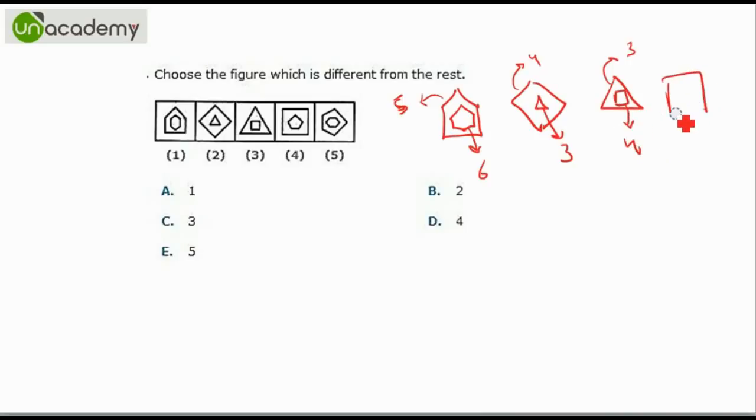Next is a square having a pentagon inside it, so that is four and five. Last one is a pentagon, so that is five and six.